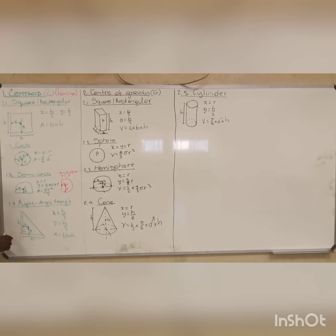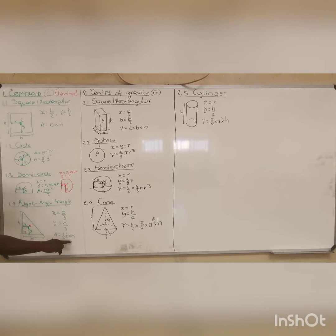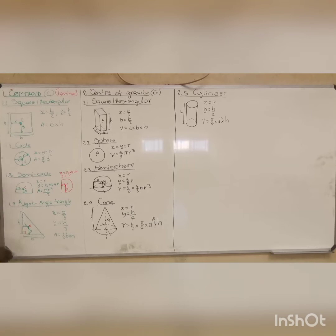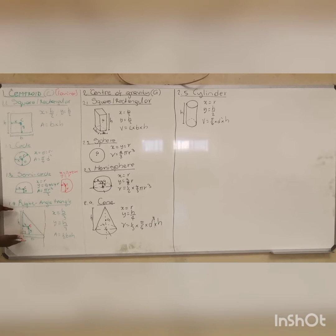For the right-hand triangle, from the 90-degree corner, your x is breadth divided by 3 and your y is height divided by 3 — that is where your centroid is. This is how you calculate the area of your triangle. From your edge to your centroid — this distance is important. You might have to find your centroid from different positions, so you must know the distance from the edge to your centroid. You must know where your centroid is and be able to calculate your area.